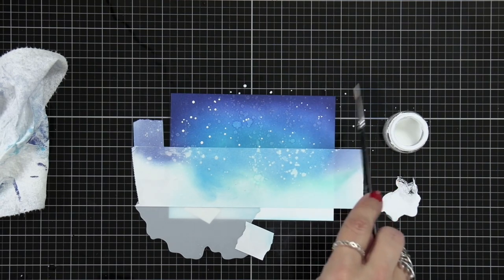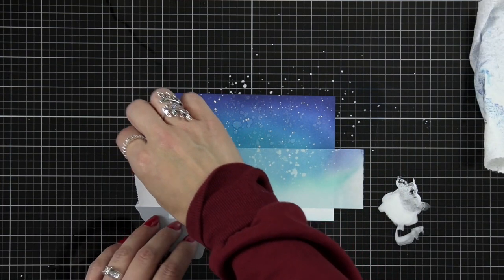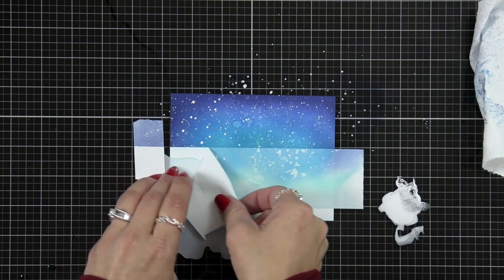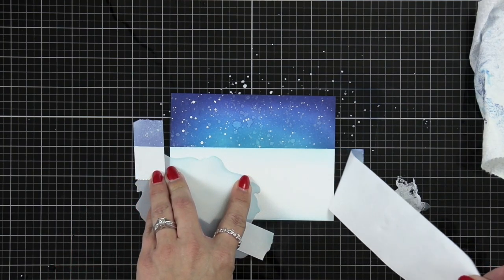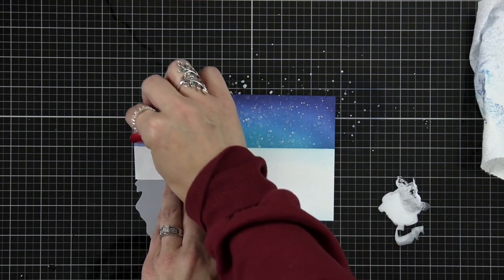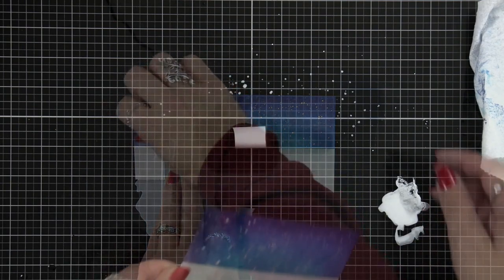I'll then carefully peel up my post-it tape and my mask and I am going to just kind of spot dry this real quick with my heat tool but for the most part I'm going to set it off on the side to let it air dry while I work on a sentiment.